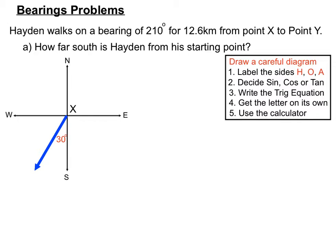He's gone from X to Y, so we'll put that on our diagram. The other information from the question is that he's travelled a distance of 12.6 kilometres, so we'll put that on the blue line. We'll also create a right angle triangle using a dotted red line to the vertical axis, allowing us to use sine, cosine, and tan ratios.